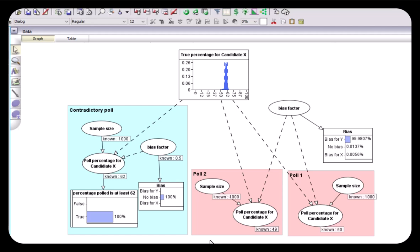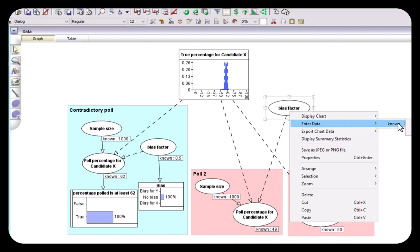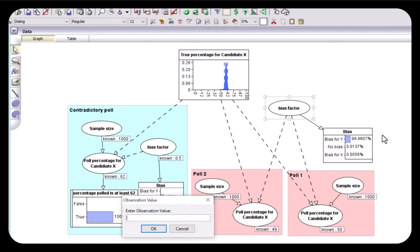Now the nice thing about this model is that it can also be used to take account of any known biases. For example, if it was known that polls one and two systematically over sampled likely supporters of Y, but only by a small amount, say four percent, then that's essentially equivalent of a bias factor of 0.48, and we run it again in this case.